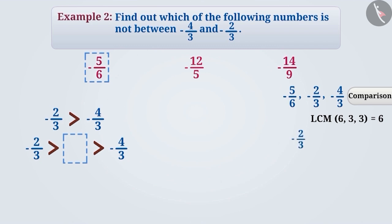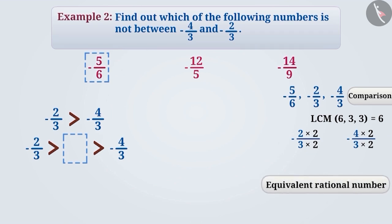For this, we multiply both the numerator and denominator of minus 2 by 3 by 2. Similarly, we multiply the numerator and denominator of minus 4 by 3 by 2. From this, the equivalent rational number of minus 2 by 3 is minus 4 by 6, and the equivalent rational number of minus 4 by 3 is minus 8 by 6. The denominator of minus 5 by 6 is already 6, so we keep it that way.